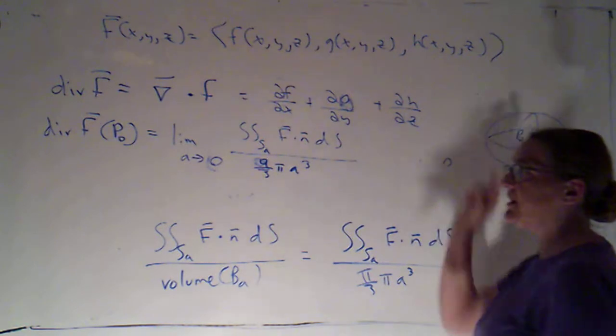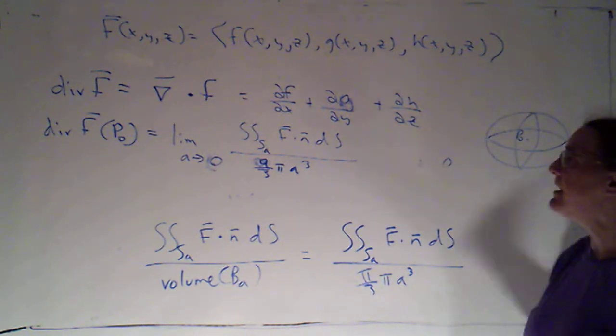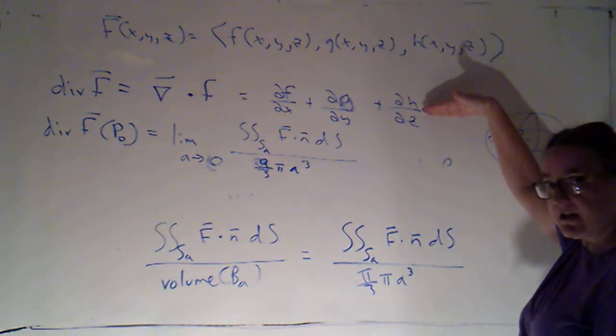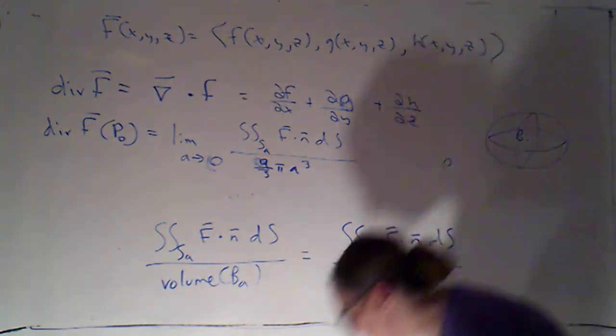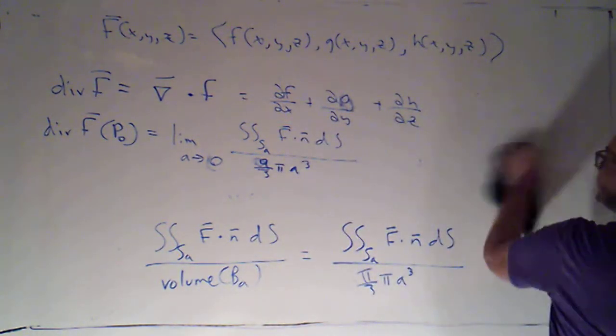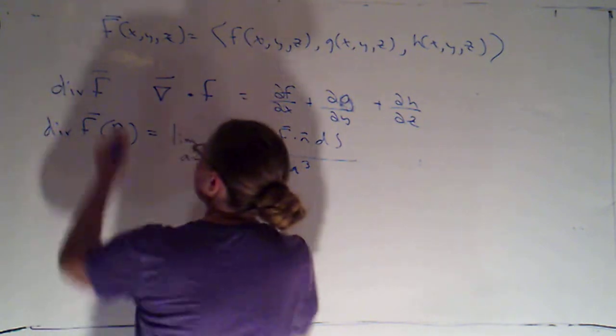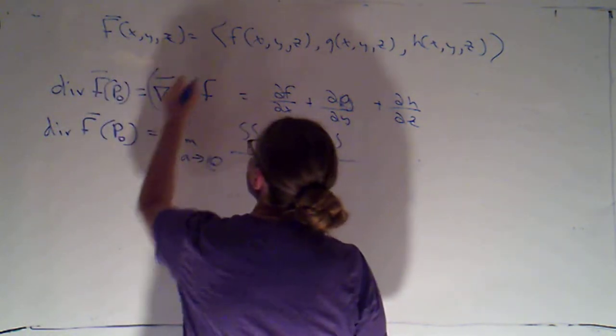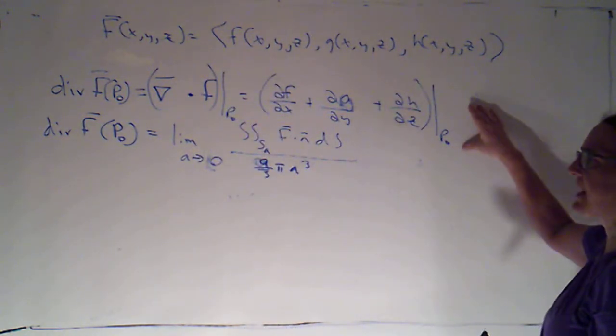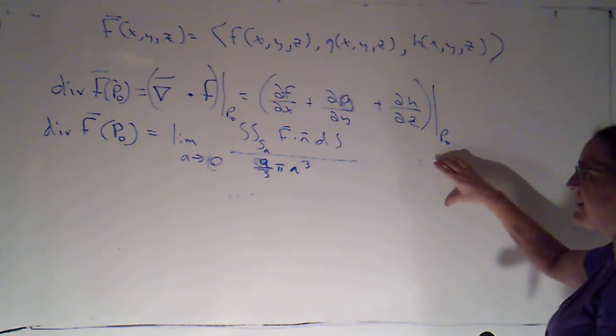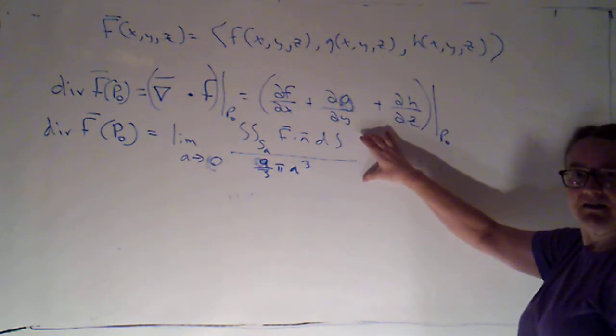And of course, I could use this definition and just evaluate it at P-naught as well. I would simply take this function and evaluate it there. So this definition tells me how to calculate the divergence. This definition tells me what it means. It is not at all obvious that the two definitions are equal. I'm going to just make it clear, because right now I've got this written as a function. But the divergence of F at P-naught would be del dotted with F evaluated at P-naught, which would be this, evaluated at P-naught. So now they're both talking about the divergence at a point. It is not at all obvious that this is the same as this. They are.